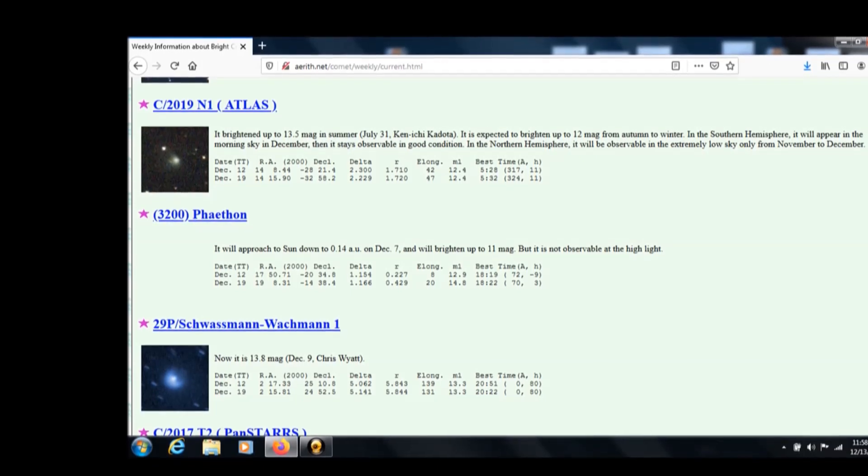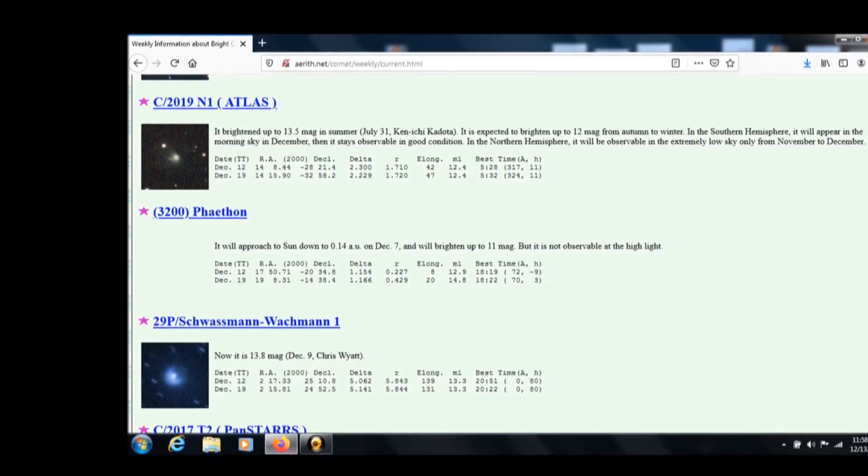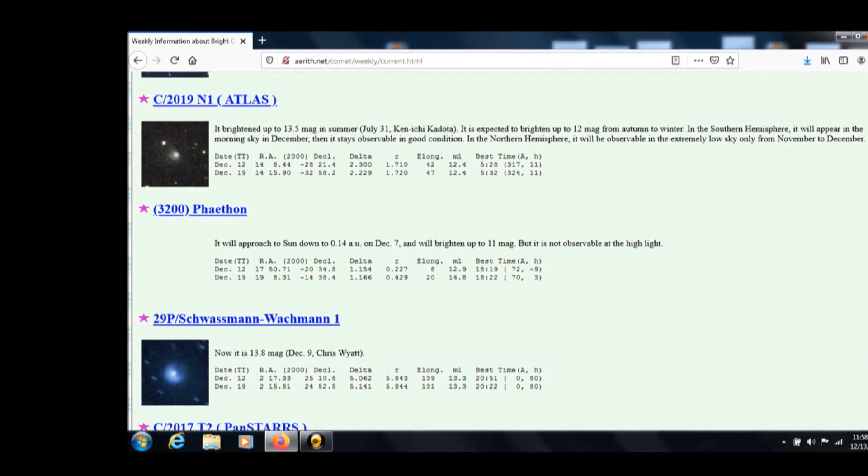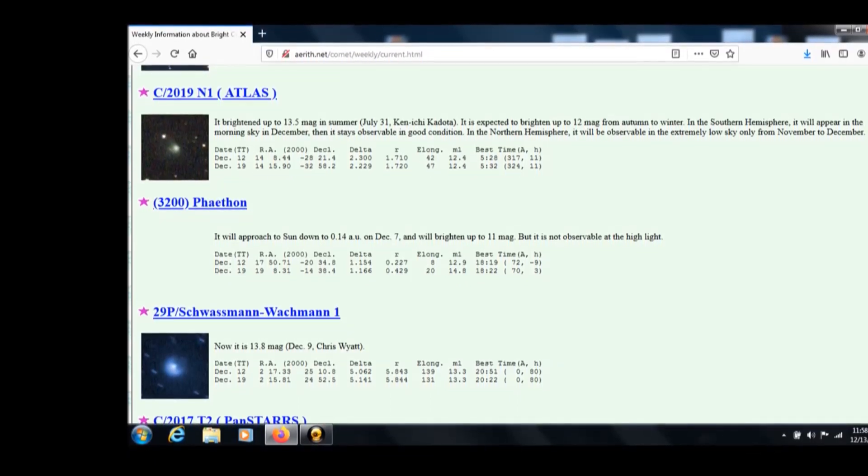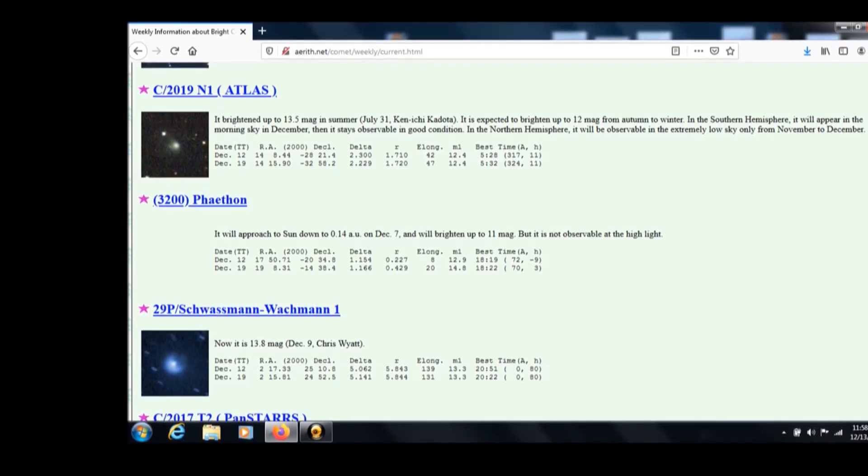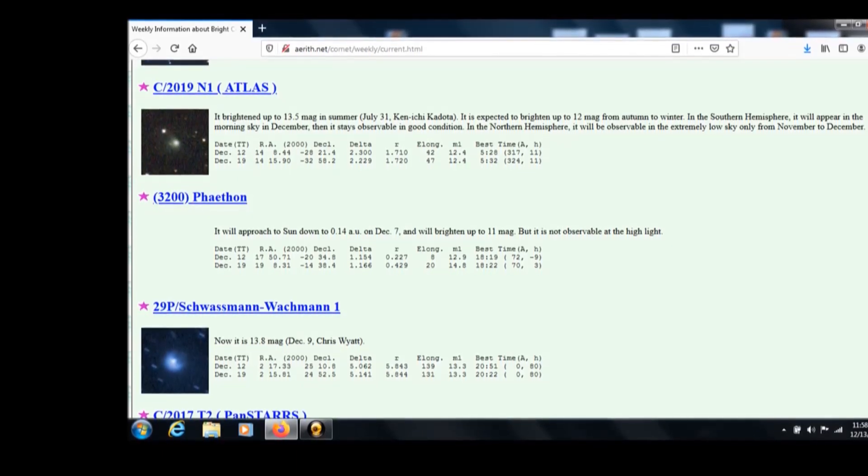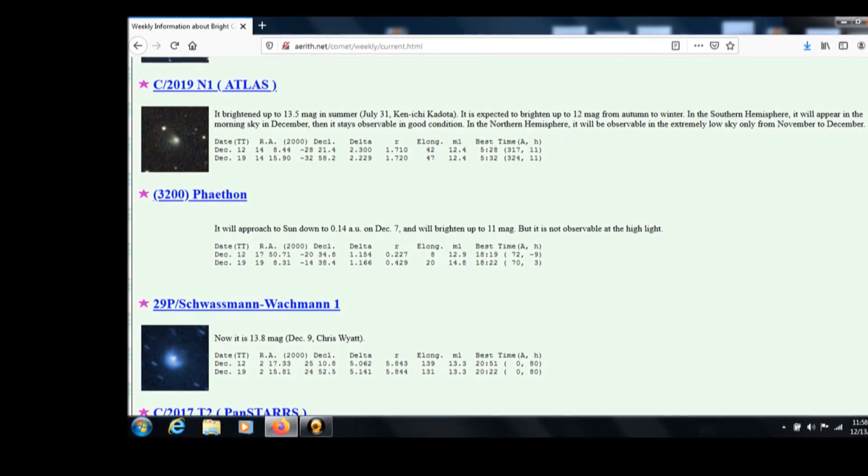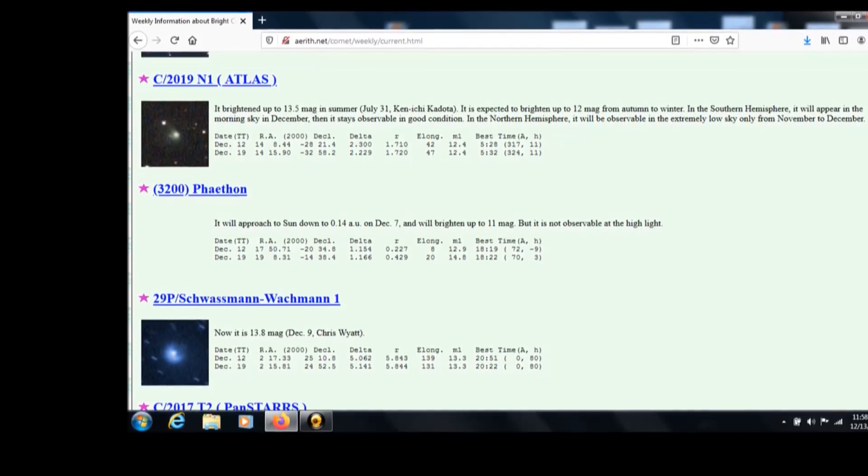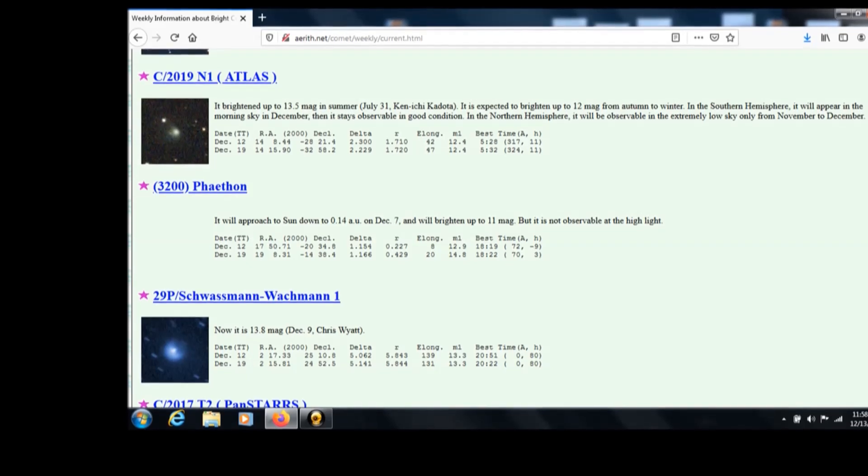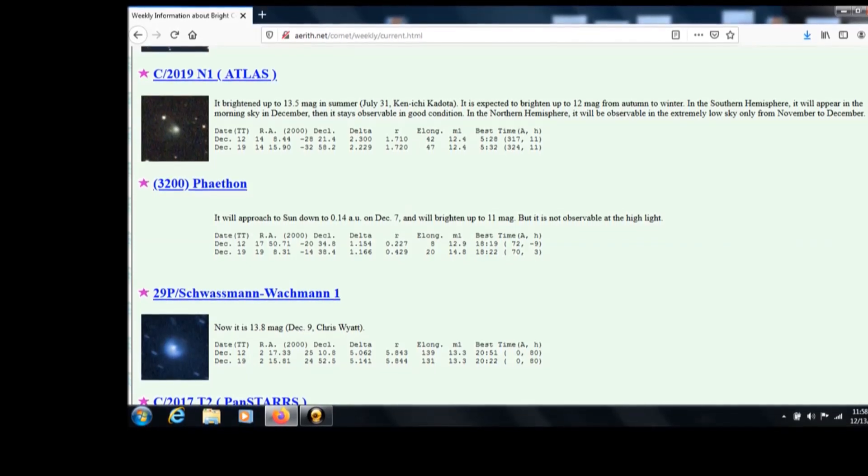Then there's 3200 Phaeton. Oh, the famed Phaeton. Part asteroid, part comet. We think all comets are. But it will approach the sun very close to the sun, 0.14 AU on December 7th. Will brighten up to 11 magnitude, but it's not observable at the high light background. It's just going to get washed out.